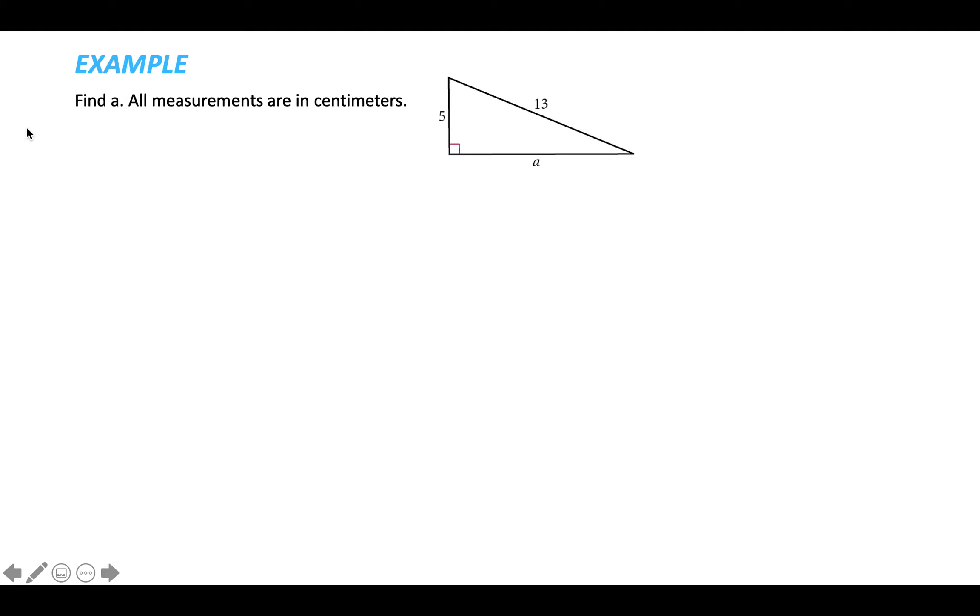Now in this one we're trying to find A. It's a bit different because it's a leg that we don't know. We know the hypotenuse, we know the longest side. We don't know one of the legs. We still use the same equation, A squared plus B squared equals C squared, but we plug in for the things we know. We know the longest side, the hypotenuse is 13, so that's why I put a 13 in for C. We know one of the legs is 5, so I plug that in for B, and we don't know the other leg A, so that's why it's still a letter.